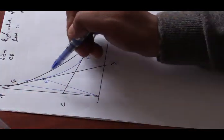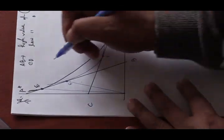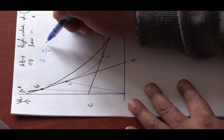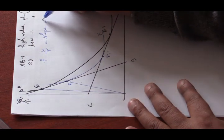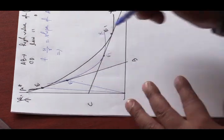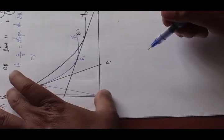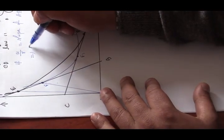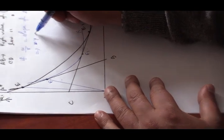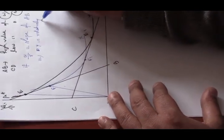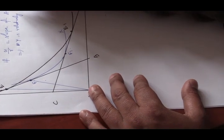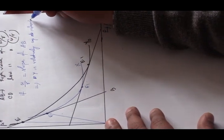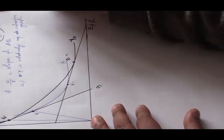Similarly, considering the high factor price ratio, we can identify the factor employment ratio for both commodity Y and commodity X. When W/R equals the slope of AB, the straight line OE is steeper than OF. Therefore, we can say that Y is relatively capital-intensive under this factor price ratio.